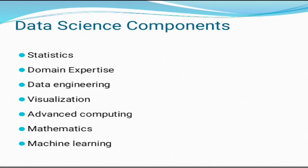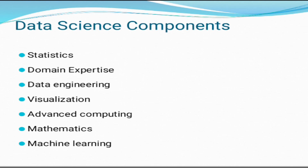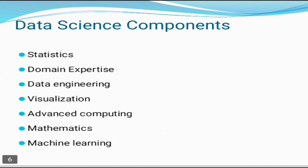The next component is advanced computing. The heavy lifting of data science is advanced computing. Advanced computing involves designing, writing, debugging, and maintaining the source code of computer programs. The next component is mathematics. Mathematics is the critical part of data science. Mathematics involves the study of quantity, structure, space, and changes. For data science, knowledge of a good mathematician is essential. The last component is machine learning. Machine learning is the backbone of data science. Machine learning is all about providing training to a machine so that it can act as a human brain. In data science, we use various machine learning algorithms to solve problems.